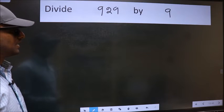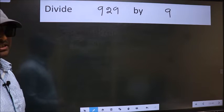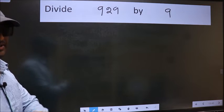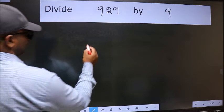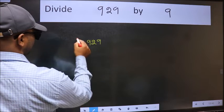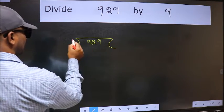To divide 929 by 9, we should frame it in this way: 929 here and 9 here.